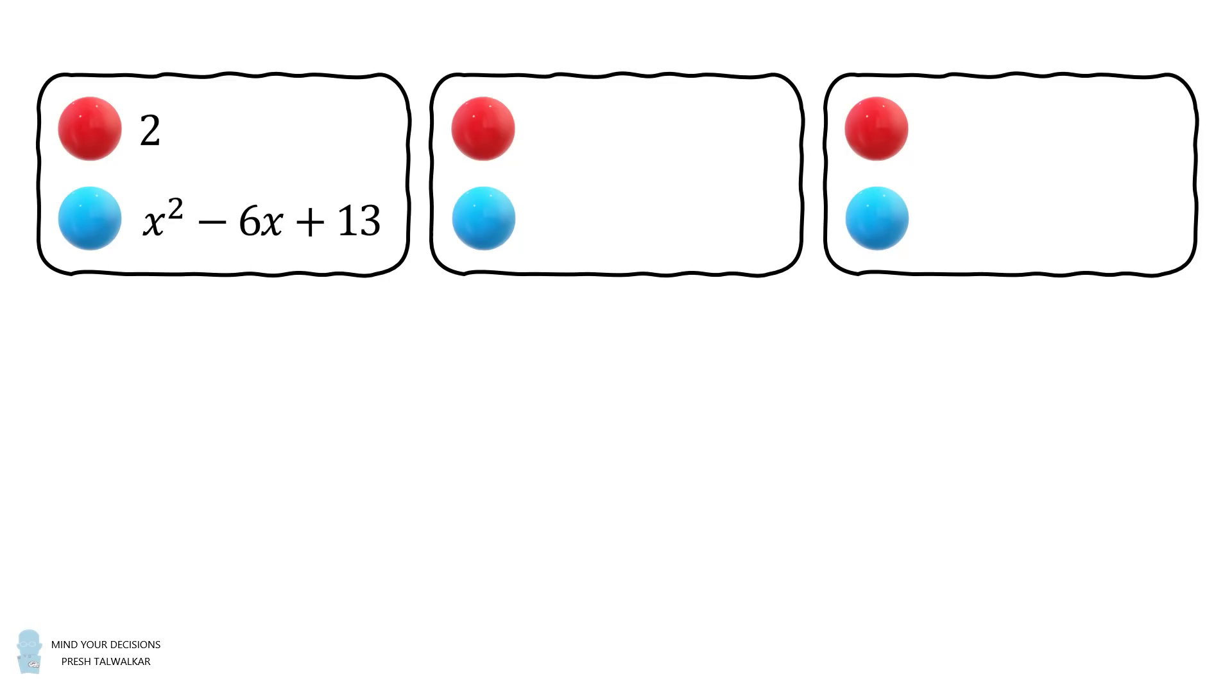The second bag contains three red balls and x squared minus 6x plus 12 blue balls. The third bag contains four red balls and x squared minus 6x plus 11 blue balls.